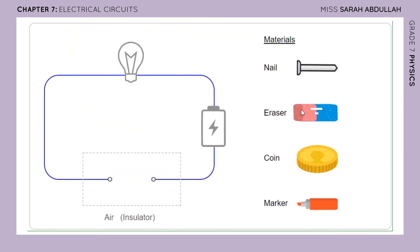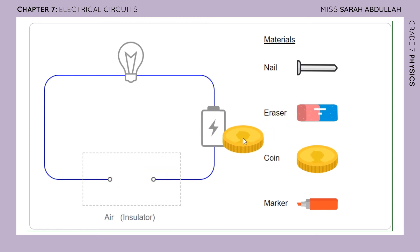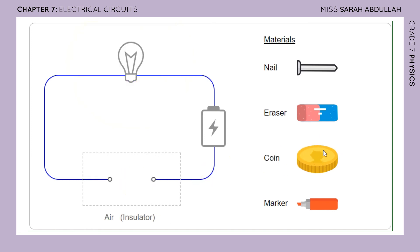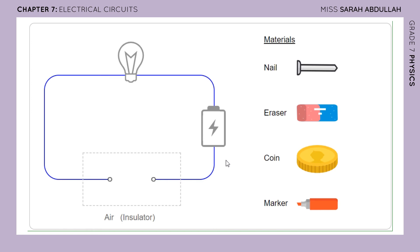Let's try the eraser — nothing happens, so the eraser is an insulator. Let's try the coin, which is a metal coin — the coin is a conductor because it allows the electricity to flow in the circuit. How about the marker? The marker is an insulator. We have many more conductors and insulators, and we'll mention most of them in the PowerPoint.